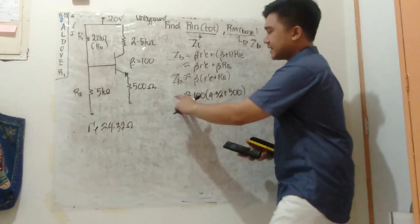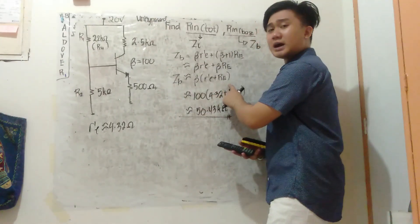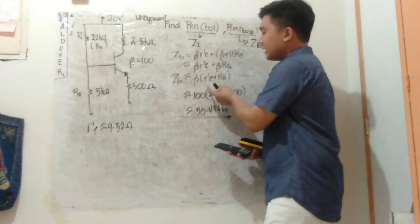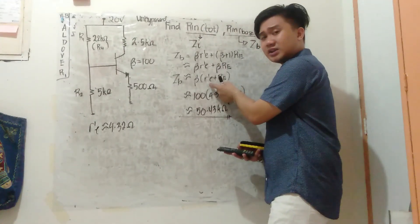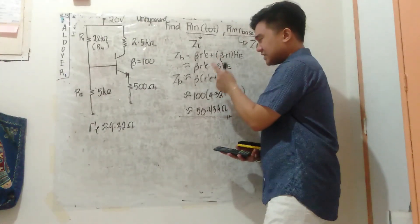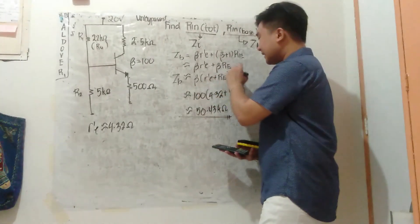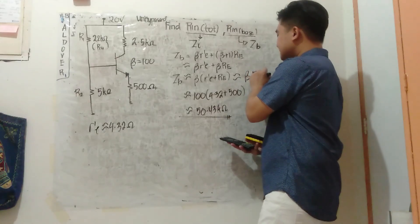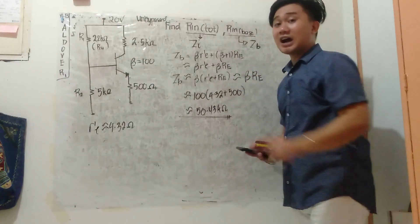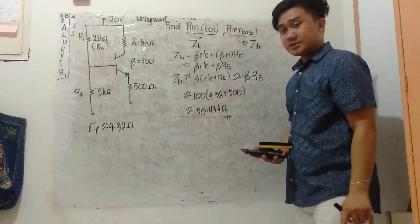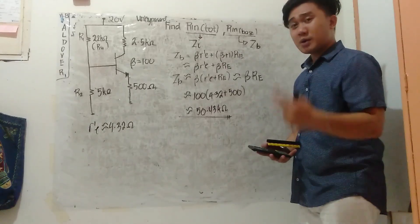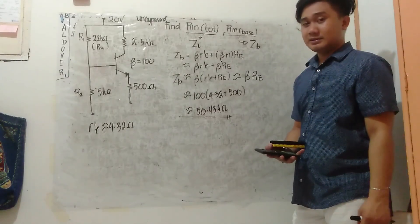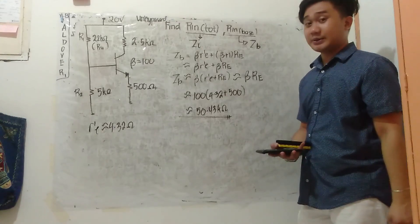In some references, when you compare the value of R prime E to RE, R prime E is so small that there's sometimes an approximation that ZB is approximately beta RE only. If you do that, you'll get exactly 50 kilo ohms. But let's go with the more exact calculation.